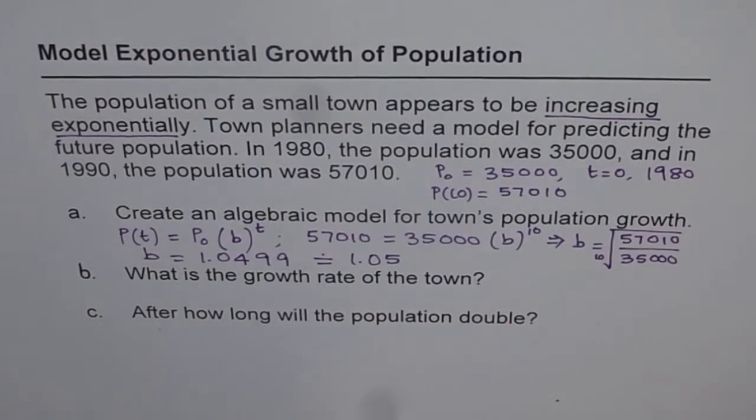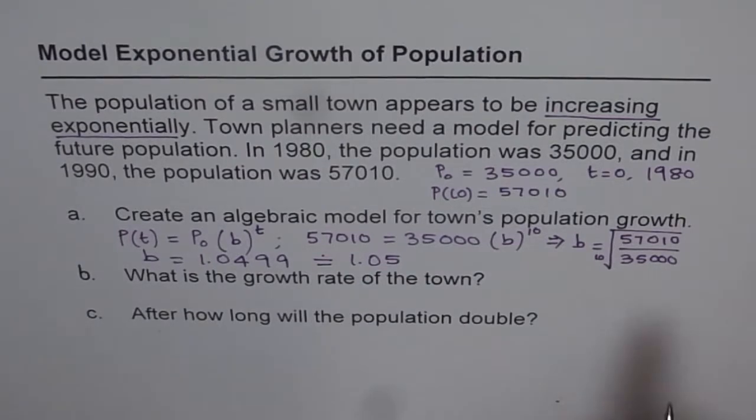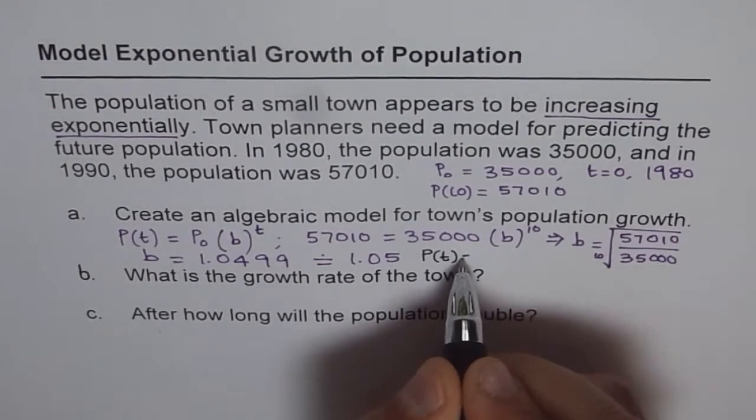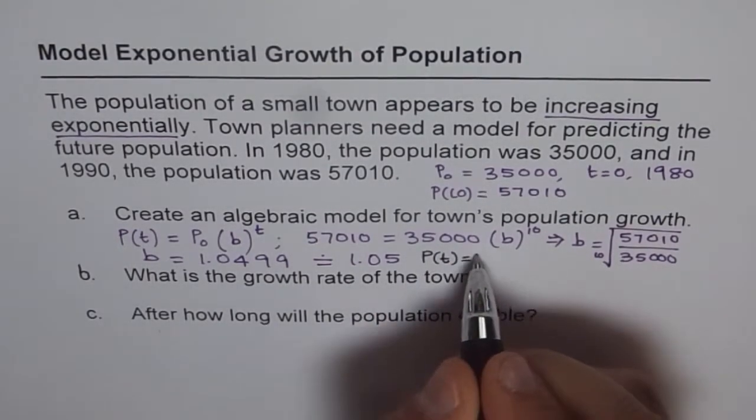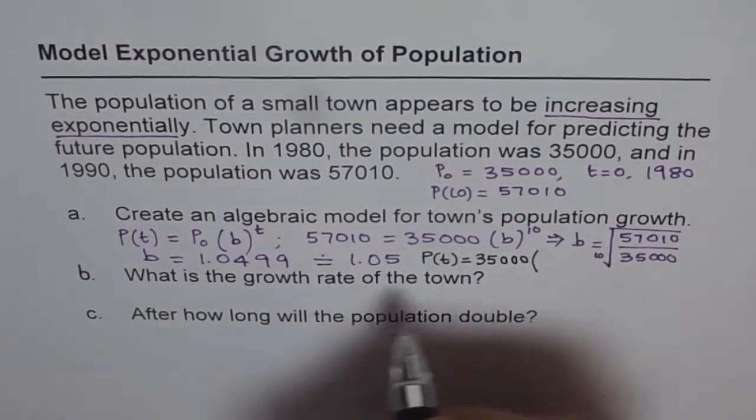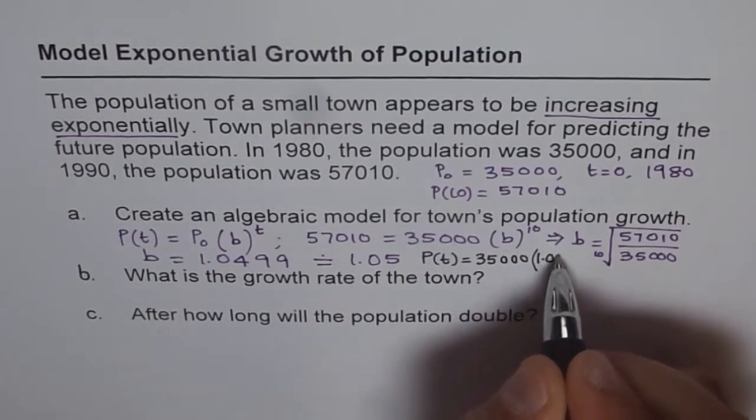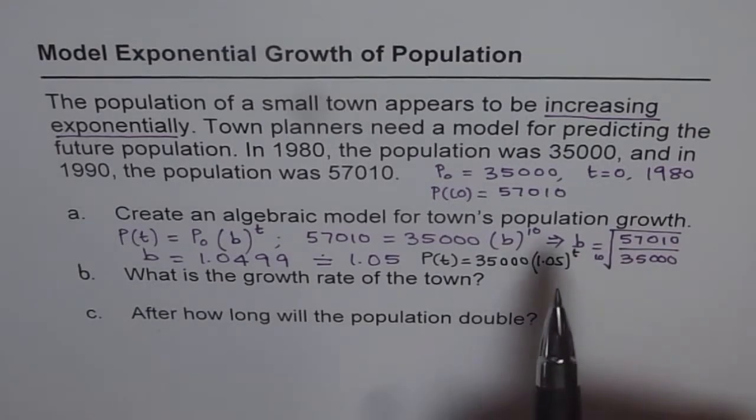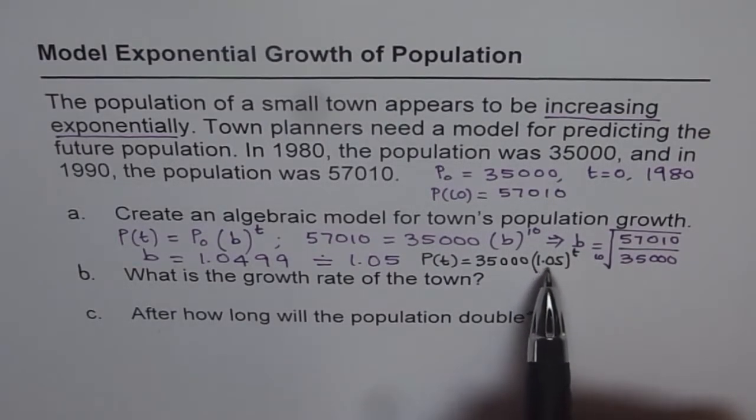So 1.05 is the growth factor, the value of b. And now we can write down our equation: P(t) is equal to initial population of 35,000 and b is 1.05 to the power of t. So that is the model which should represent this given scenario. It is an exponential growth and the growth factor is 1.05.